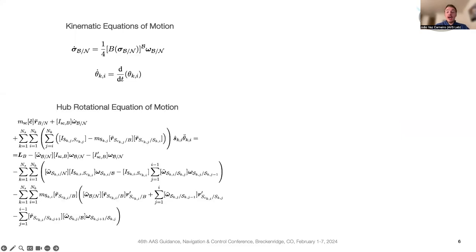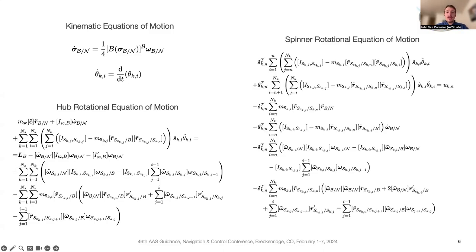We also have the hub rotational equation of motion. We've kept things very general and didn't make any simplification, so all the cross coupling terms are here still. Finally, we have a rotational equation of motion for each panel. For each mode, we also have an equation of motion.